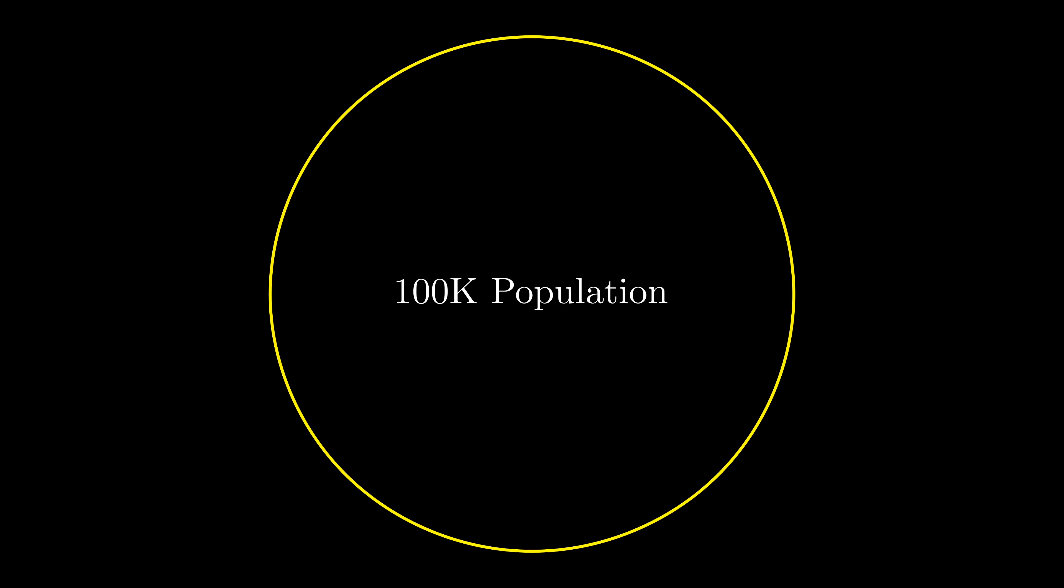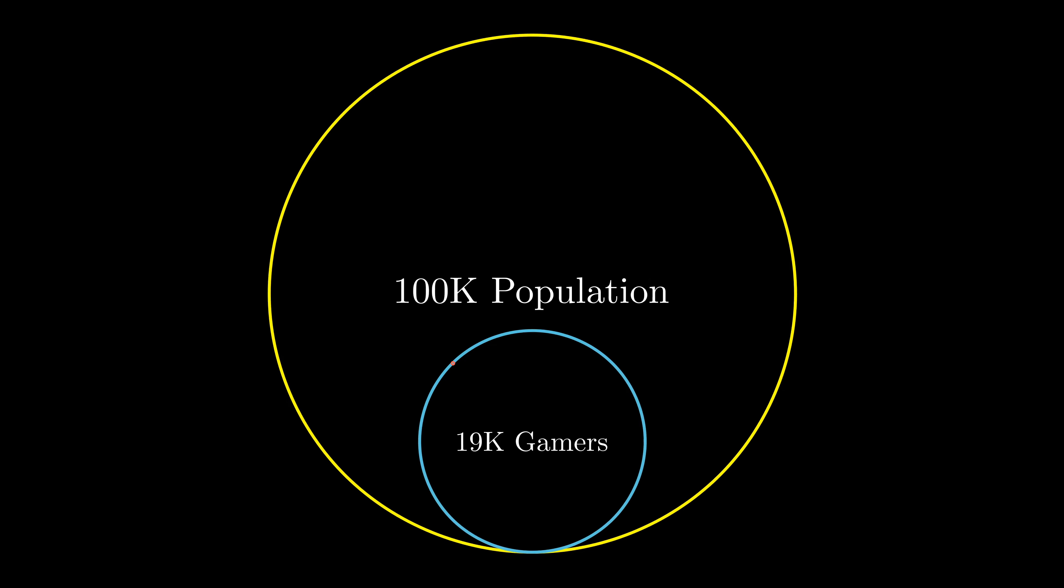Let's say I have this circle representing a 100,000 population. Of that population, 19,000 are gamers, which is 0.19 of the population. You may not see it, but there is a very tiny part of the population representing the homicidal people. Let's zoom into it and take a look.